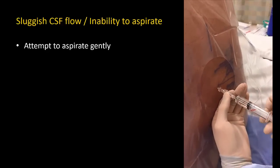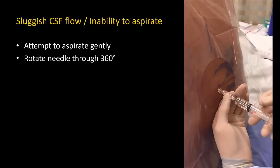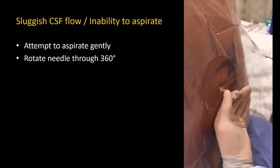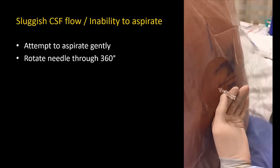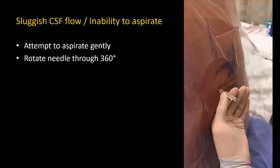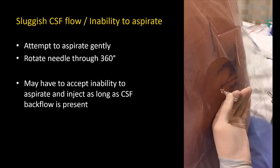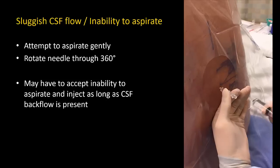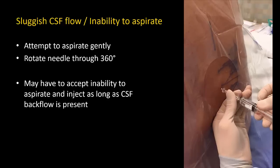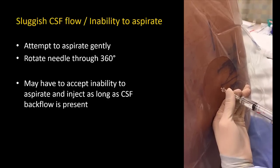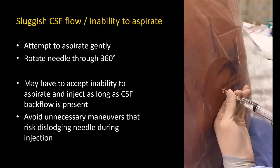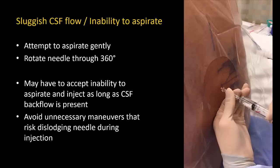If the plunger doesn't move, disconnect the syringe, rotate the needle 360 degrees, and look for backflow of CSF. In the event that I really cannot aspirate after a couple of attempts, I don't keep trying. Instead, I disconnect one last time, look for evidence of backflow by movement of the CSF meniscus, and then attach the syringe and inject very carefully. I avoid unnecessary maneuvers that risk dislodging the needle during injection, such as aspirating midway through.